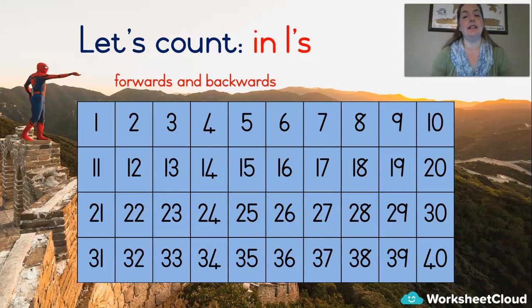Now let's count backwards. We're going to start at 30, and we're going to finish at 11. Can we do that? It's easy. Let's try it together. 30, 29, 28, 27, 26, 25, 24, 23, 22, 21, 20, 19, 18, 17, 16, 15, 14, 13, 12, 11. Stop there. Very good.